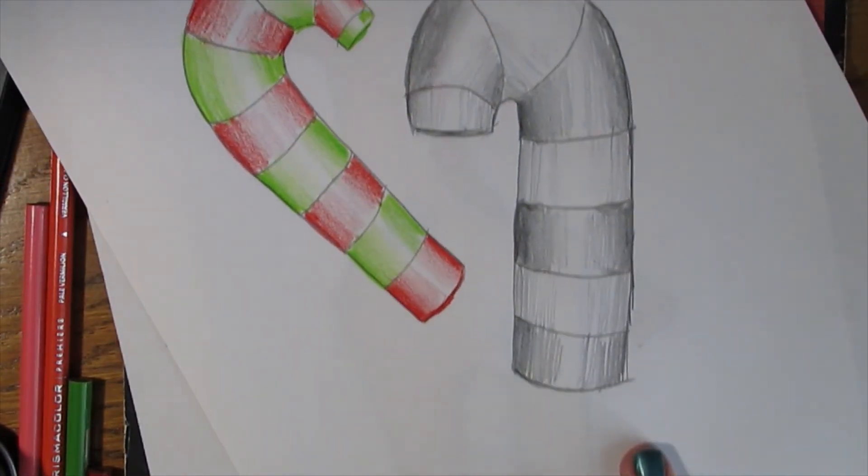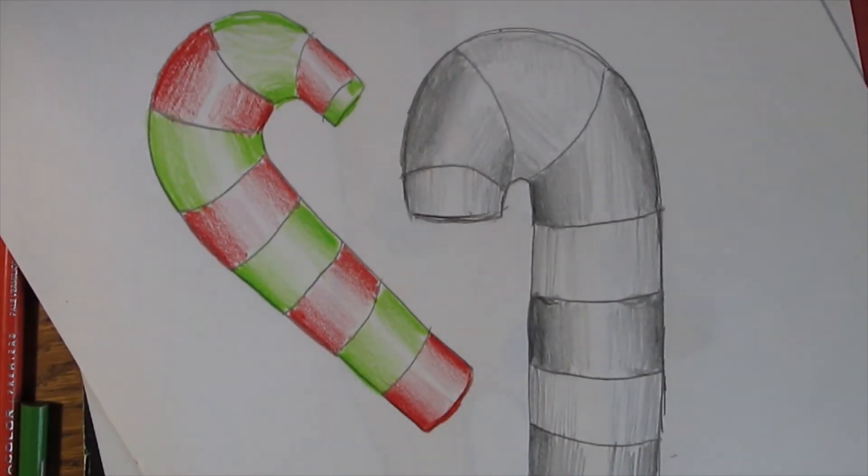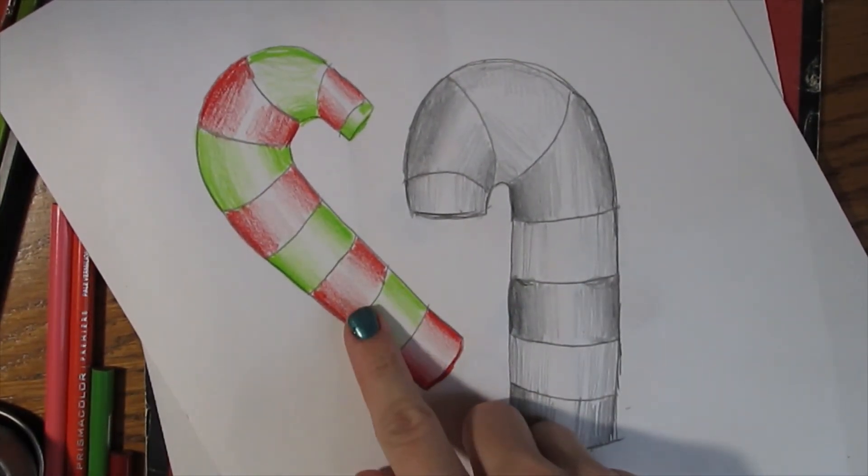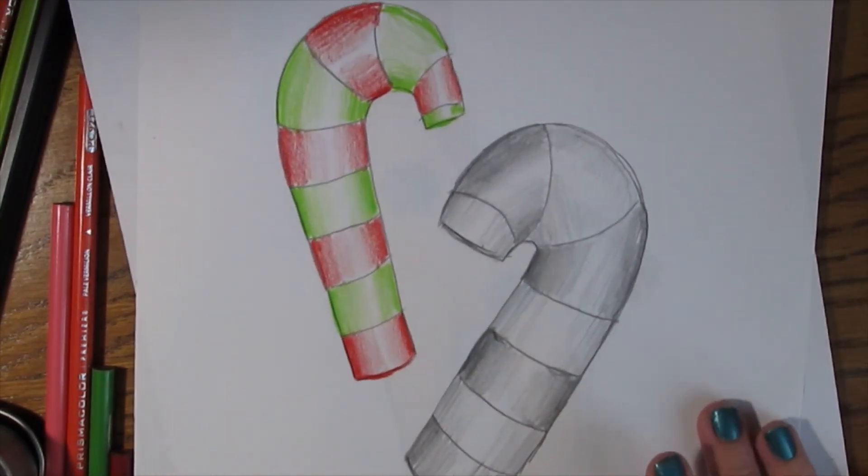There we have it. Here is our colored candy cane and our black and white candy cane. You can see how we've made both of them look a little bit more three-dimensional just by using value.